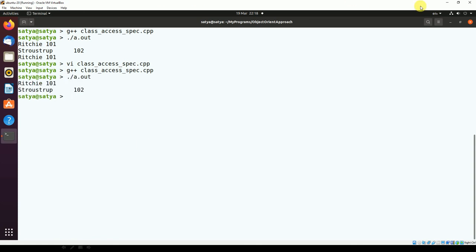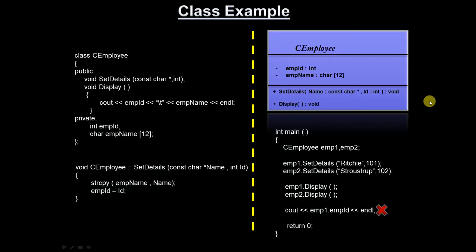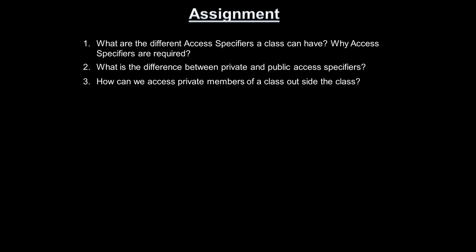That's all for today. Here is a quick assignment: What are the different access specifiers a class can have, and why are access specifiers required? What is the difference between private and public access specifiers? And how can we access private members of a class from outside — since direct access is not possible, what is the way to access them? Thanks for watching.